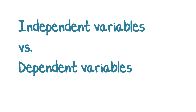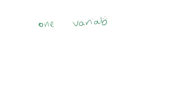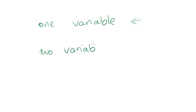This tutorial is going to look at independent variables versus dependent variables and how to tell them apart. With univariate data — uni meaning one — we were dealing with data that had one variable. In the bivariate section, bi means two, and we're going to be talking about two variables and comparing them one to the other.